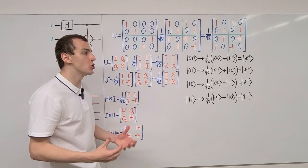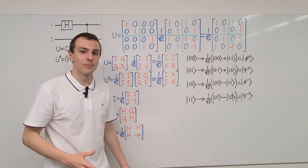The key takeaway is that a quantum circuit consisting of a Hadamard gate and a controlled NOT gate maps the two-qubit computational basis states to the Bell states. This constructs the Bell basis — another orthonormal basis for a two-qubit system living in a four-dimensional Hilbert space. You can find all the other videos in the quantum mechanics playlist where we continue discussing these Bell states.